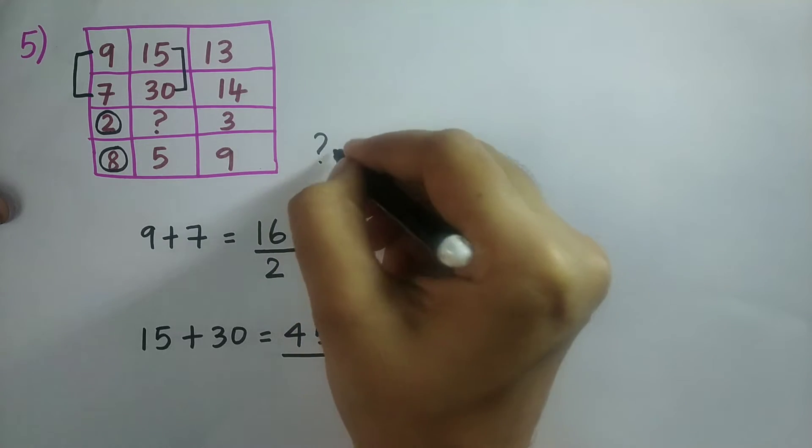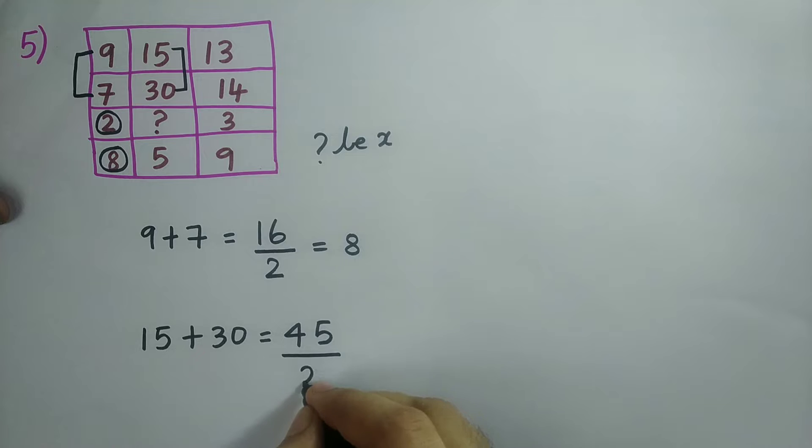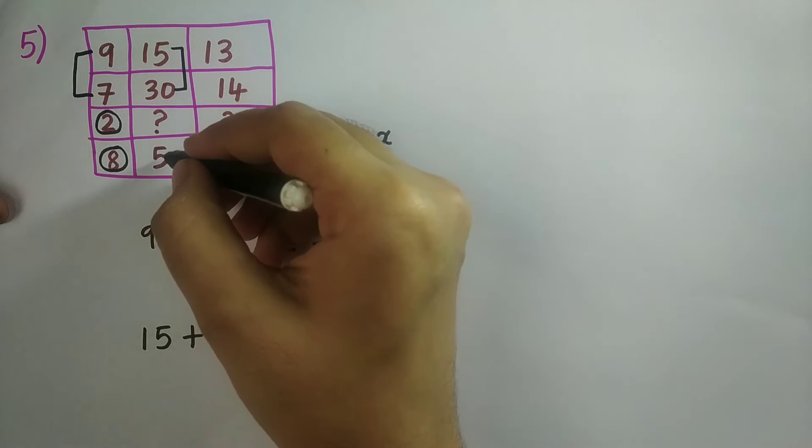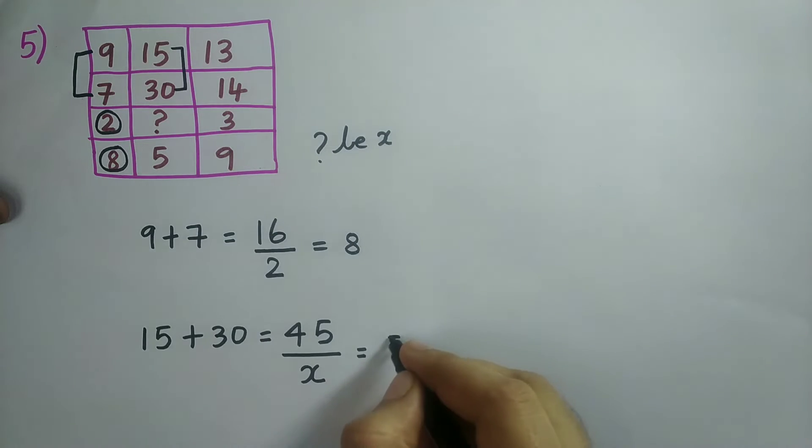So I am going to take the question mark as x. So 45 divided by x is equal to—I will get the answer as the last row's number. So it is 5. So I should write 5.